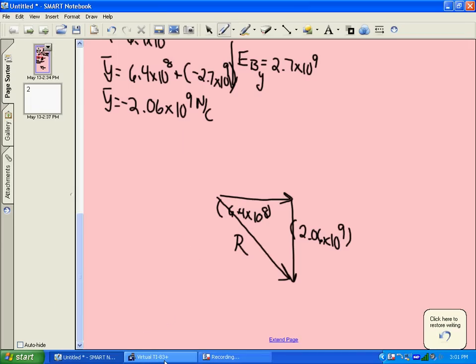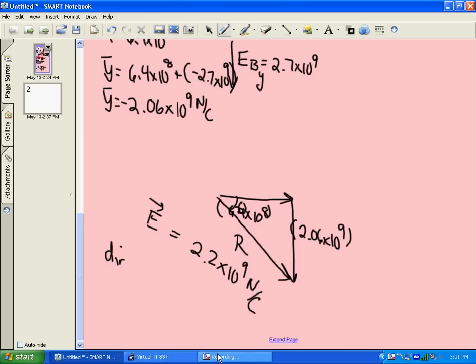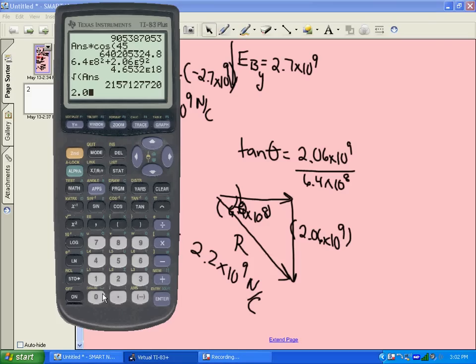And the direction of that, you have to work out what that angle would be. So we can figure out our angle in here. You take the tangent. Would be opposite 2.06 times 10 to the 9 over the adjacent side, which was 6.4 times 10 to the 8. And you take inverse tan of that fraction to figure out what the angle would be. 2.06 times 10 to the 9 divided by 6.4 times 10 to the 8, inverse tan of the answer gives us a 73 degree angle.